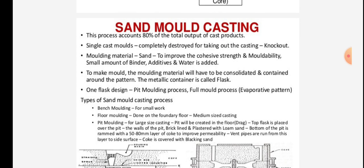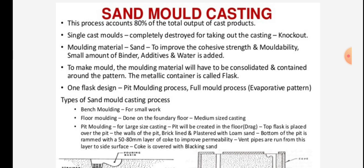Sand mold casting accounts for 80% of the total output of cast products. Single-use molds are completely destroyed for taking out the casting. The molding material is sand; a small amount of binder, additives, and water is added to improve cohesive strength and moldability. The molding material is consolidated around the pattern, and the metallic container is called a flask.